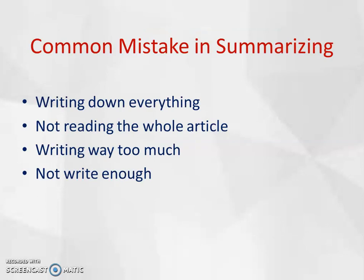Common mistakes in summarizing: the first one is writing down everything. Those doing a summary tend to write down everything, but summarizing is not about writing word for word — you are not copying word by word, because summarizing is only to get the main idea from the original text. The second one is not reading the whole article, or reading it too quickly, which means you may not get the right main idea from the reading text.